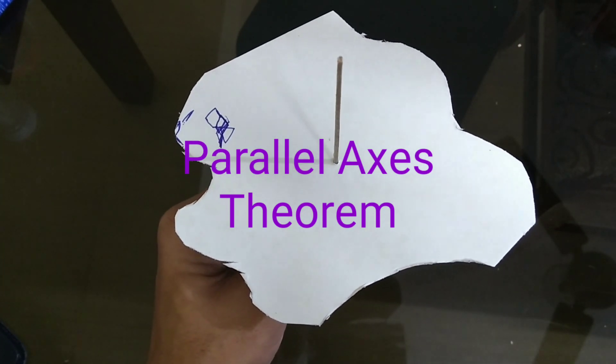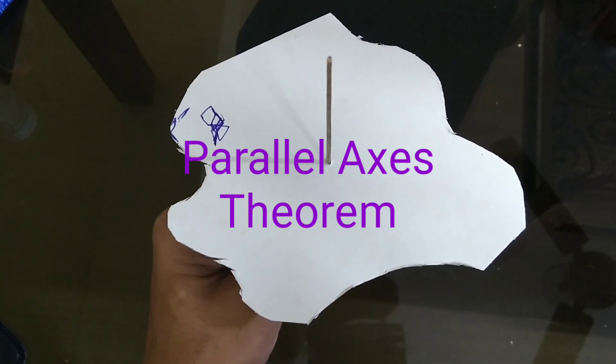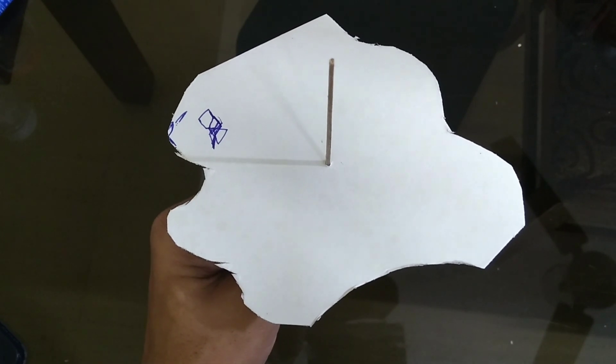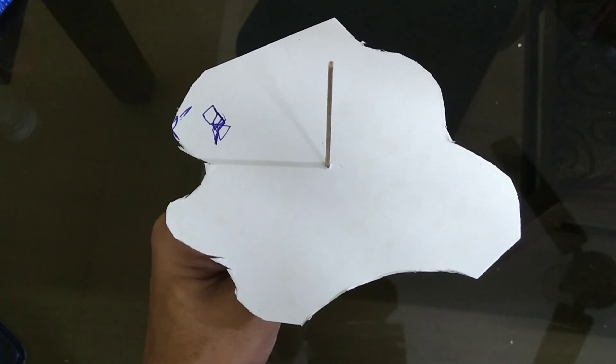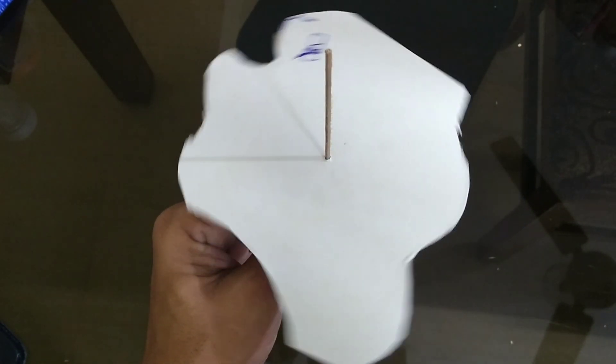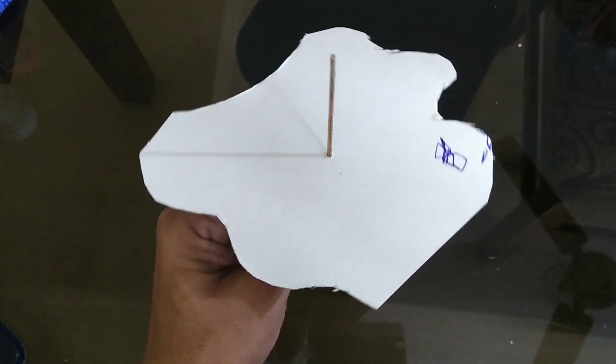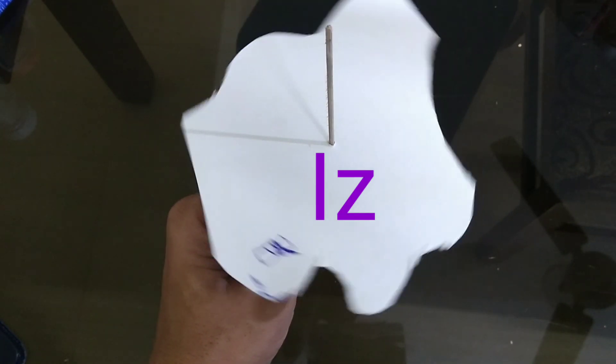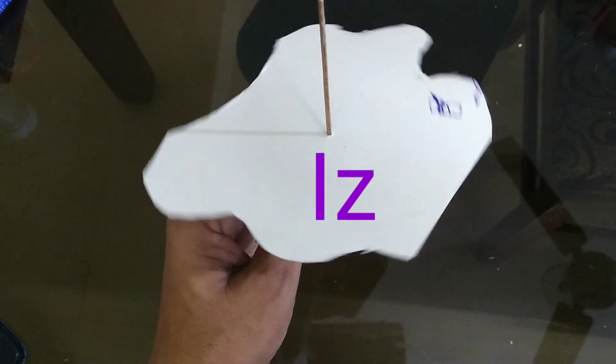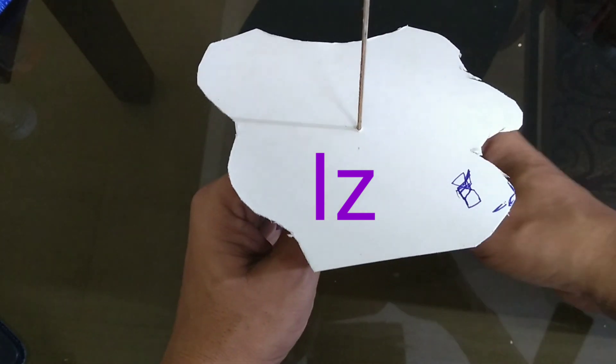In this video we will do an experiment on parallel axis theorem. Consider a lamina as shown in the figure. Suppose the lamina is rotating about an axis passing through the center of mass. Moment of inertia of the lamina about the center of mass is IZ.